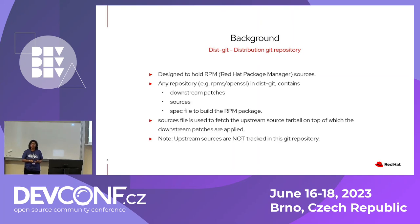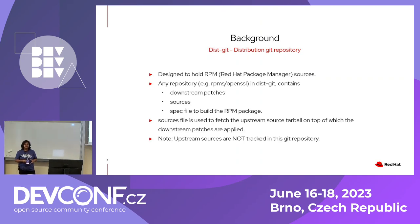Where are all these packages stored? These packages are stored in a distribution git repository called distgit. Distgit is designed originally to hold RPM sources. For every package, the contents of distgit are: downstream patches, a source file that points to the upstream tarball, and a spec file that acts as a rulebook to govern how package maintaining should happen. It's important to note that distgit does not track the upstream source git history — it only tracks those files.